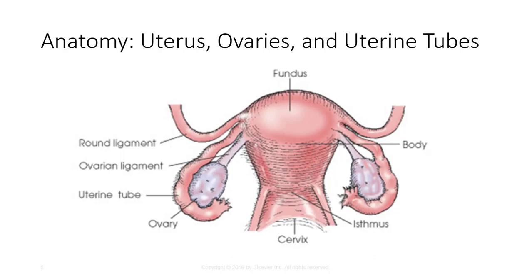The fundus is the blunt, rounded superior portion, and the body narrows superiorly from the fundus to the inferior isthmus. The isthmus is the superior part of the cervix, which is a constricted area between the body and the cervix. The cervix is the cylindric, vaginal end of the uterus. The vagina is attached around the circumference of the cervix and is approximately 1 inch or 2.5 centimeters long.